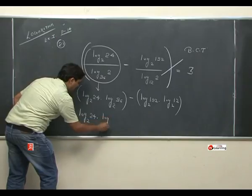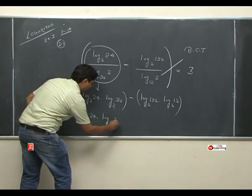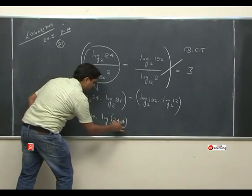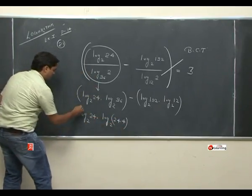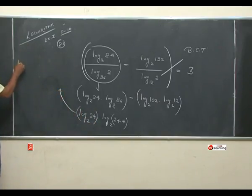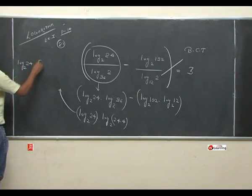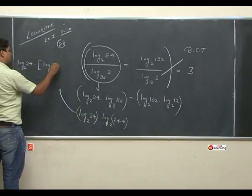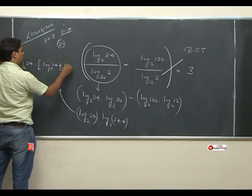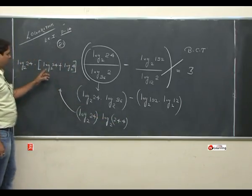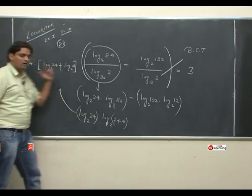log 96 dot 24 dot 4, base 2. अब पताये — यह into है, और into plus में convert होता है। तो इसके बाद मैं यहाँ लिखता हूँ: log 24 base 2 dot. मैं property log mn लगा रहा हूँ। तो क्या होगा: log 24 base 2 plus log 4 base 2. By property, log mn = log m + log n.